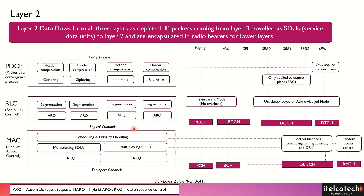The different information coming from the upper layer is mapped onto logical channels. There are different logical channels: the paging channel, broadcast channel, common control channel, and traffic channel.